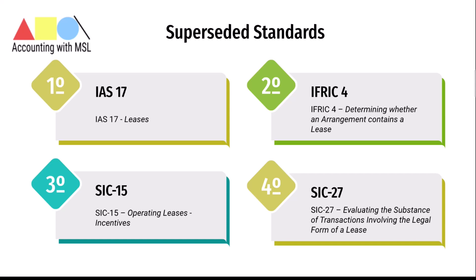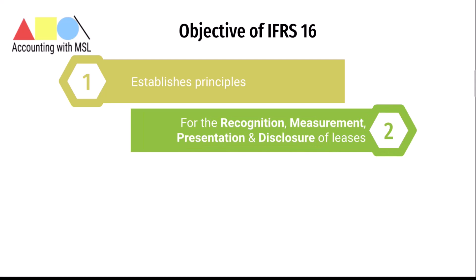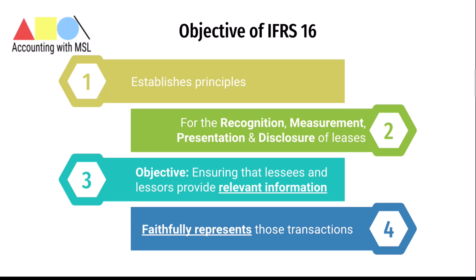Now that we know the history, what is the objective of IFRS 16? Why was the standard issued? IFRS 16 establishes the principles for the recognition, measurement, presentation and disclosure of leases with the objective of ensuring that lessees and lessors provide relevant information that faithfully represents all those transactions.